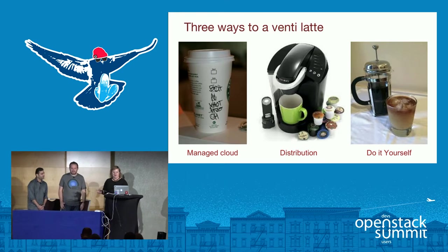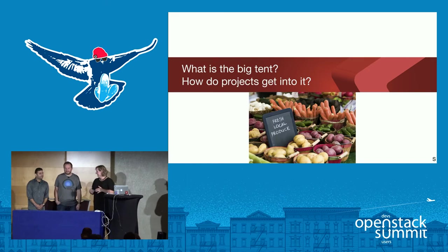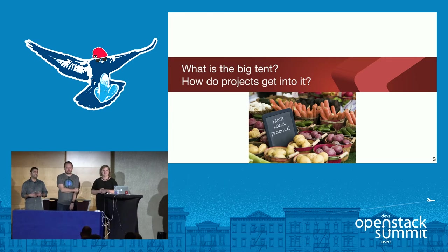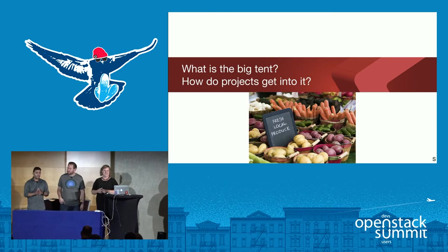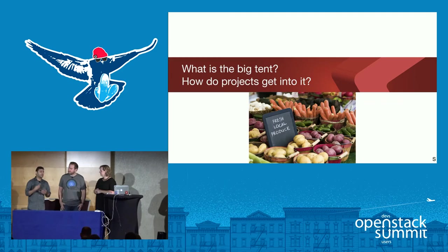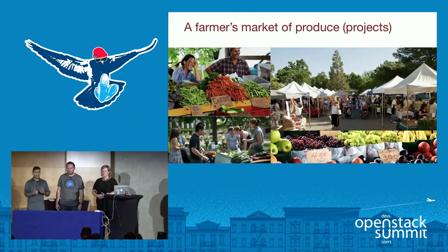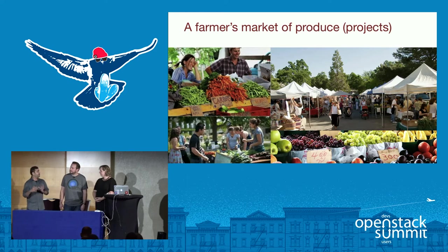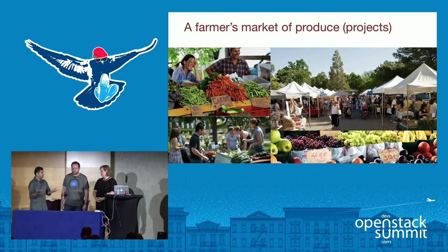Let's talk about the big tent, because that comes up pretty often. The best way to describe it starts with thinking about tents, which led us to think about a farmer's market. In the big tent, there's a set of criteria, and as long as you adhere to the OpenStack four opens, you can become part of the big tent. Much like a farmer's market — anyone can pay the fee, set up a booth and a table, and as long as they're meeting certain guidelines about signage and real estate, they can sell their goods at the market.